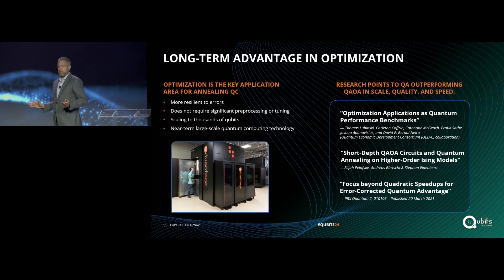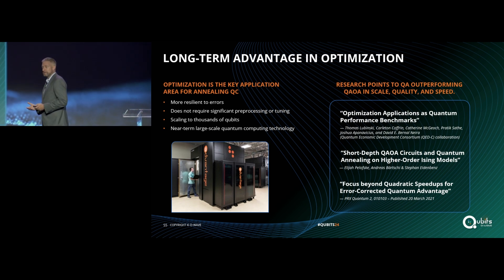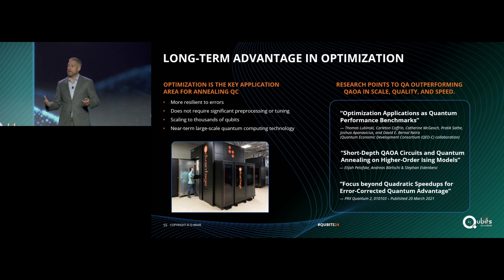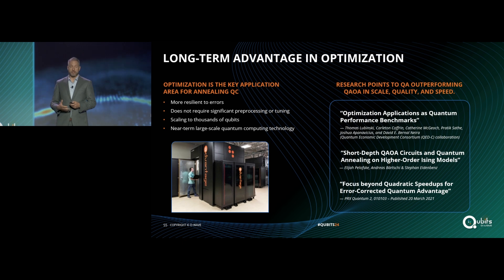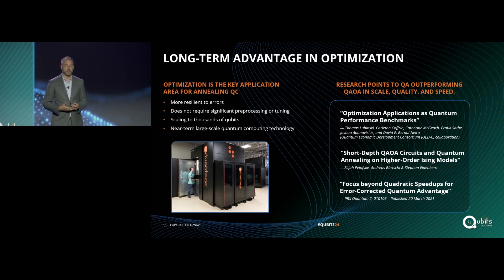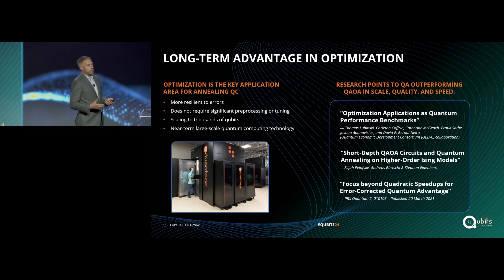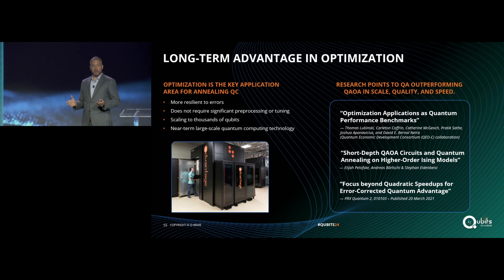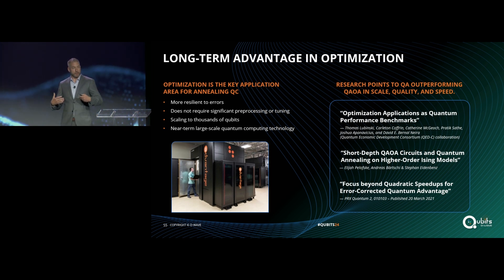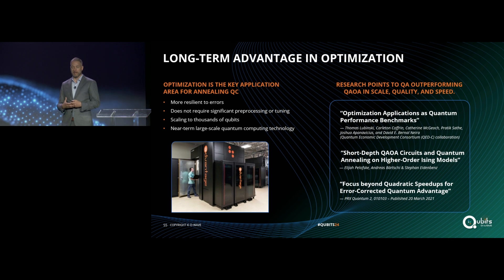The proof is really in where we've been able to take this technology over the last decade plus. We're currently scaling to systems that have many thousands of qubits in the fabric of the processors. This is a technology — annealing quantum computing — that's commercial today and is a path to very near-term large-scale quantum computing. The research over the last 10 years has really reinforced our perspective that annealing architectures have a long-term advantage for optimization.